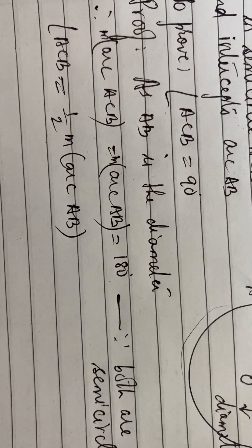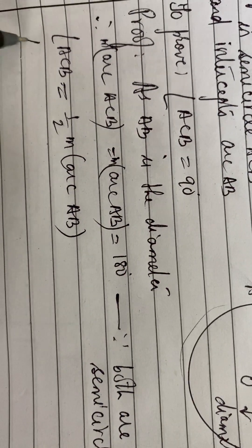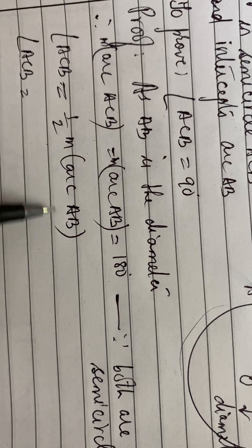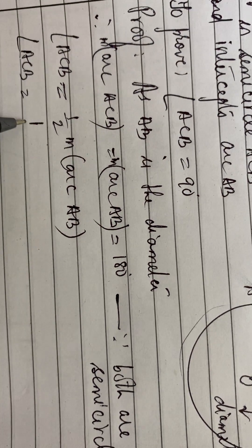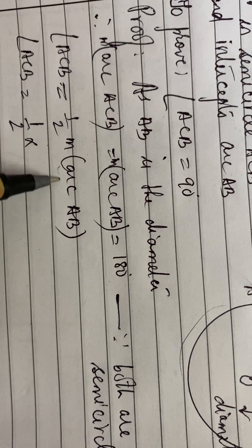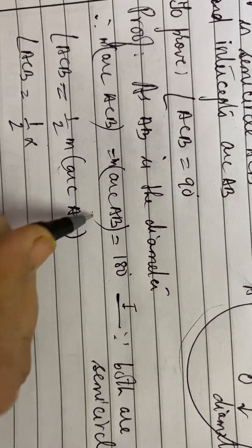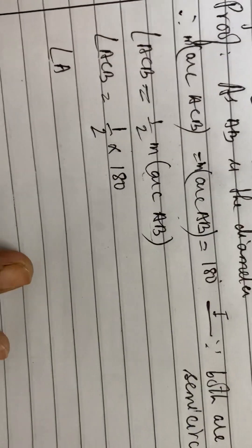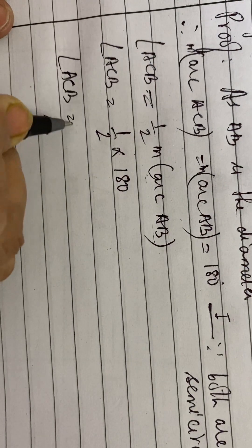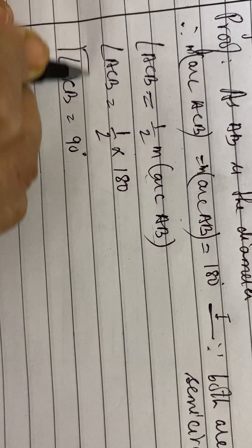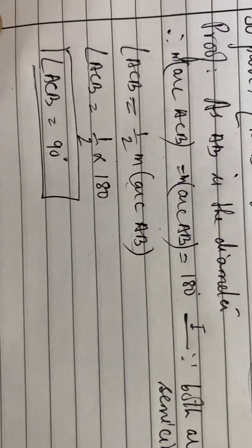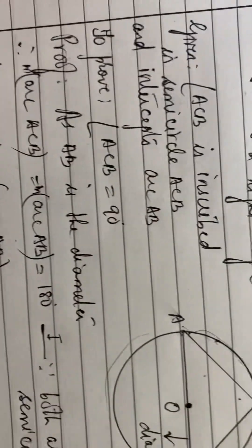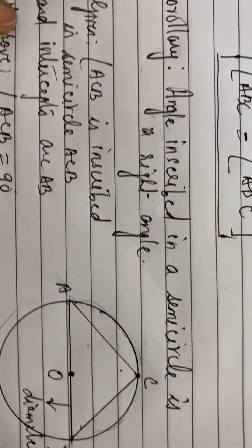Now, angle ACB is equal to half of the measure of arc AB, by the inscribed angle theorem. The measure of arc AB is 180 degrees. So angle ACB is equal to half of 180, which is 90 degrees. Therefore, angle ACB is a right angle. This is what we had to prove — an angle inscribed in a semicircle is a right angle.